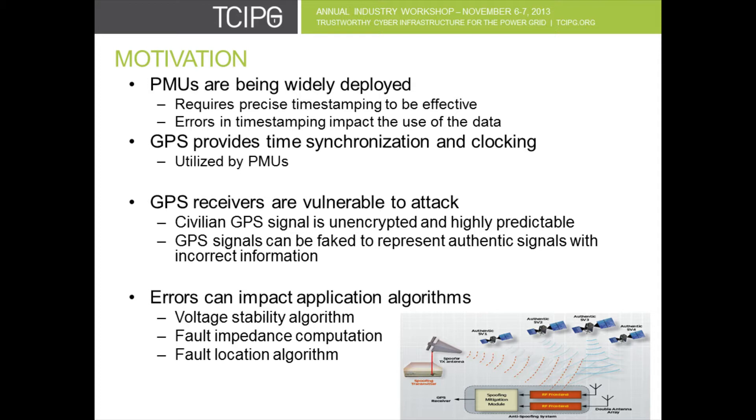PMUs use a GPS receiver front-end in order to derive time synchronization across all measurements across the network. They do so by having the GPS receiver receive the signals from the satellites and then computing a local receiver clock offset. That local receiver clock offset is applied to all the local clocks and corrects the errors in the clock so that all the measurements are synchronized.